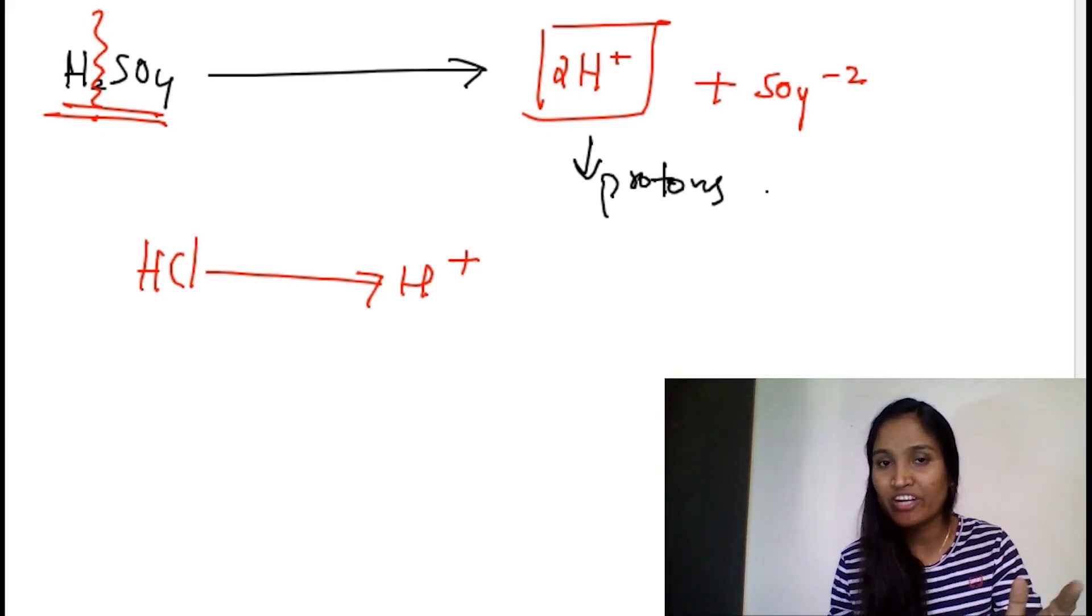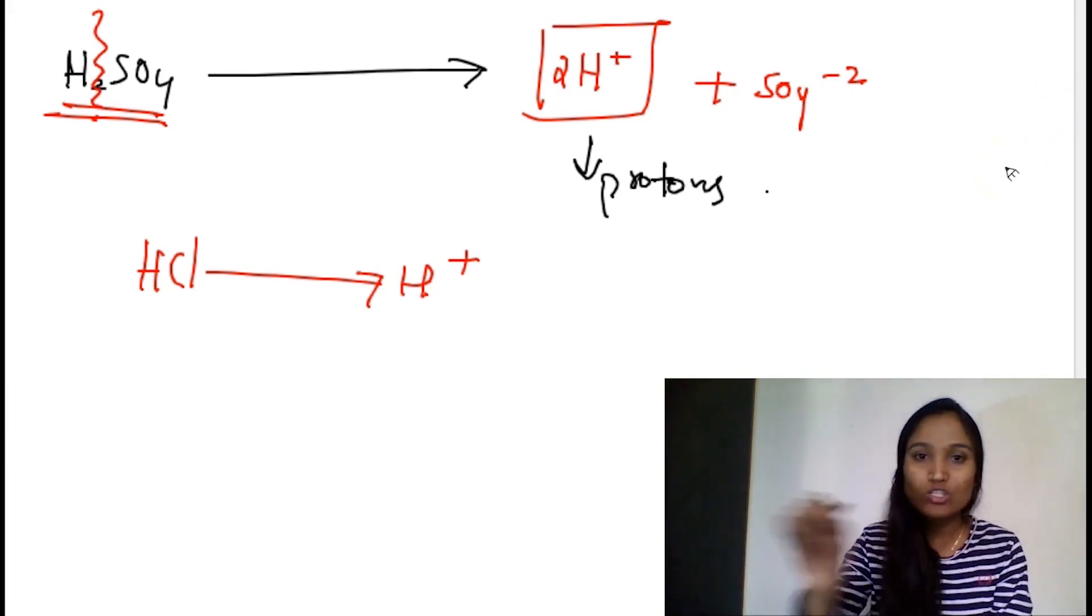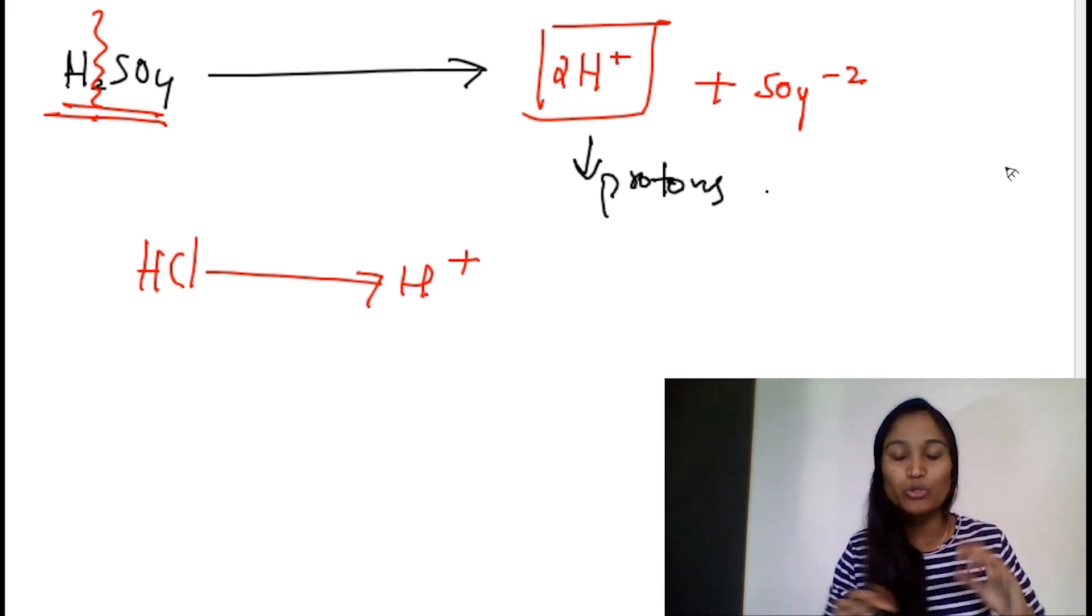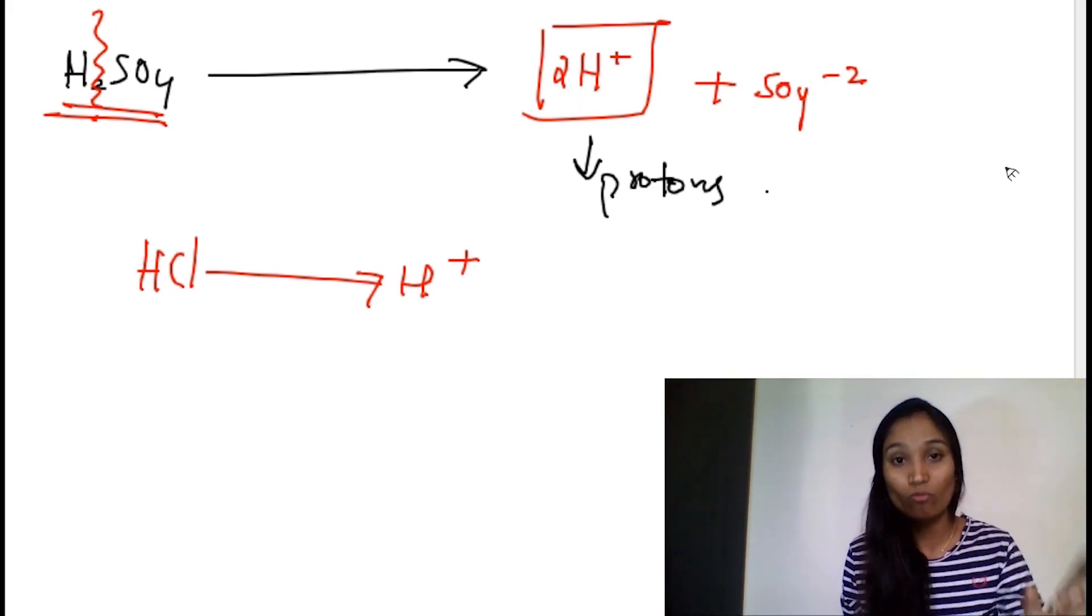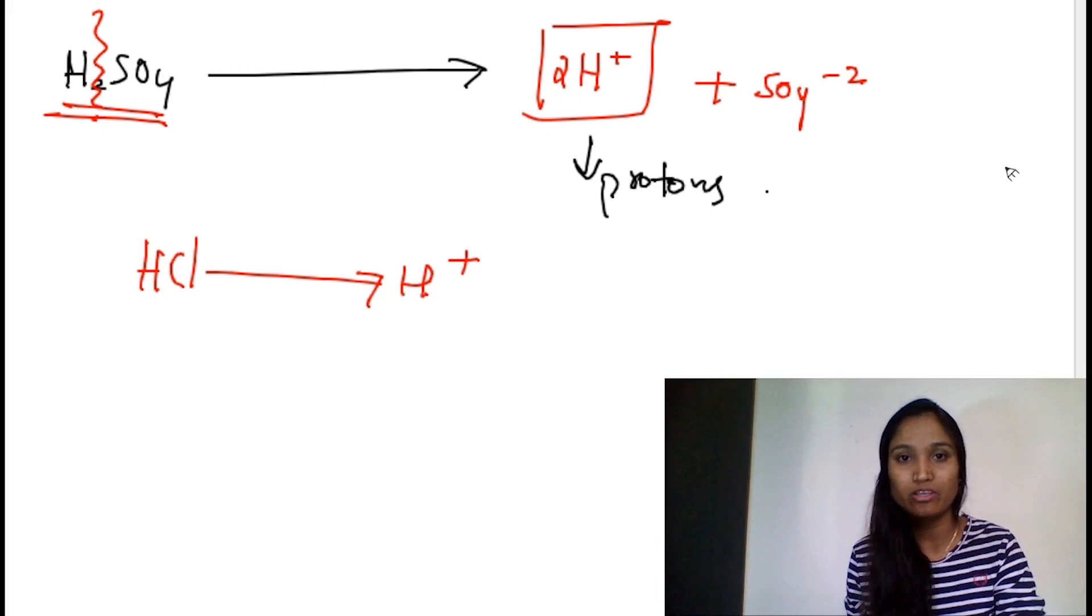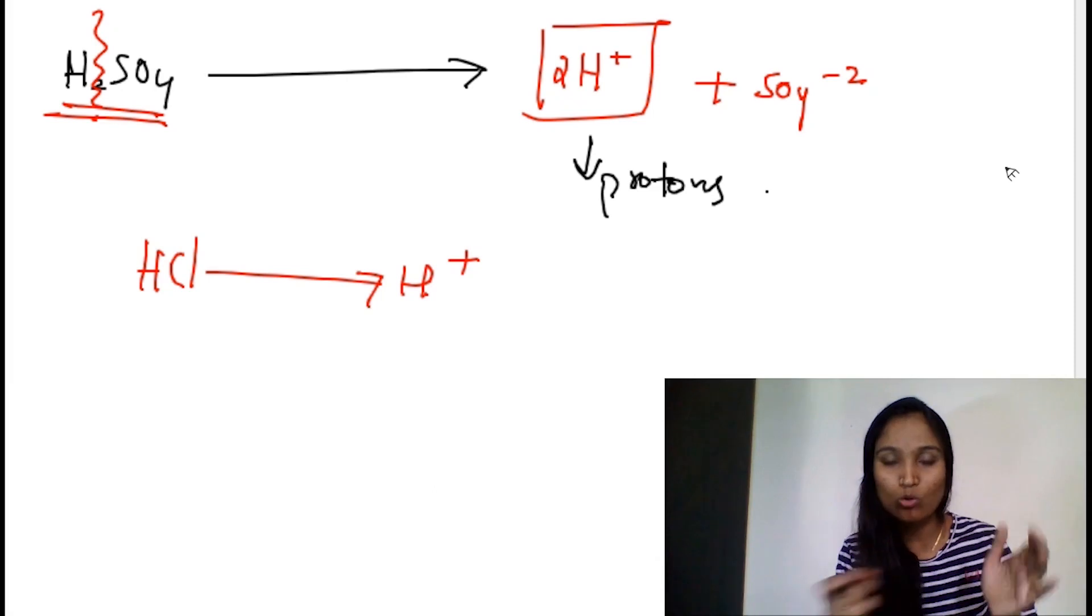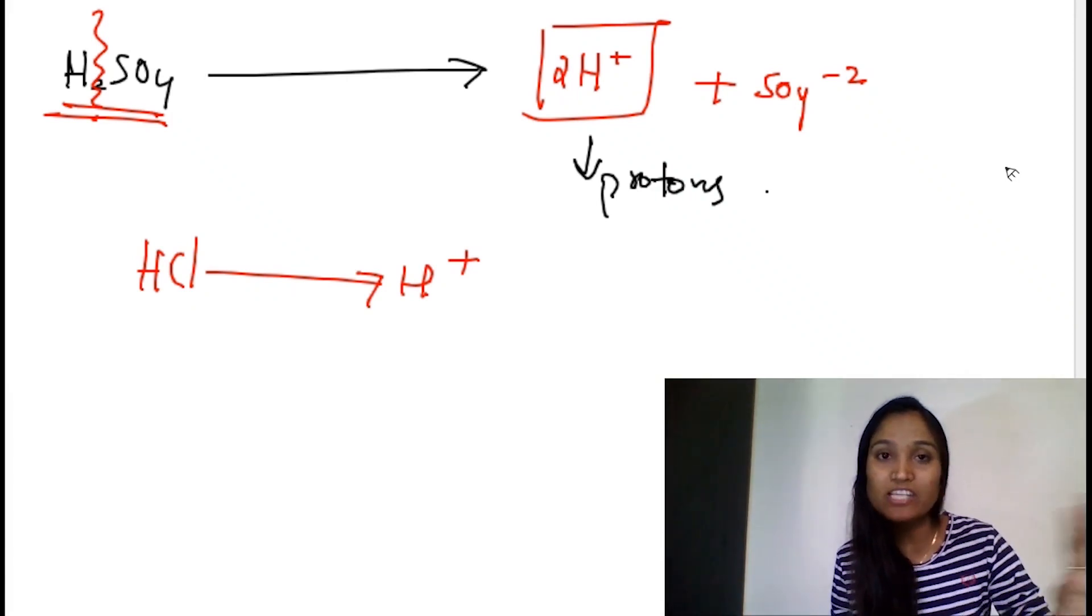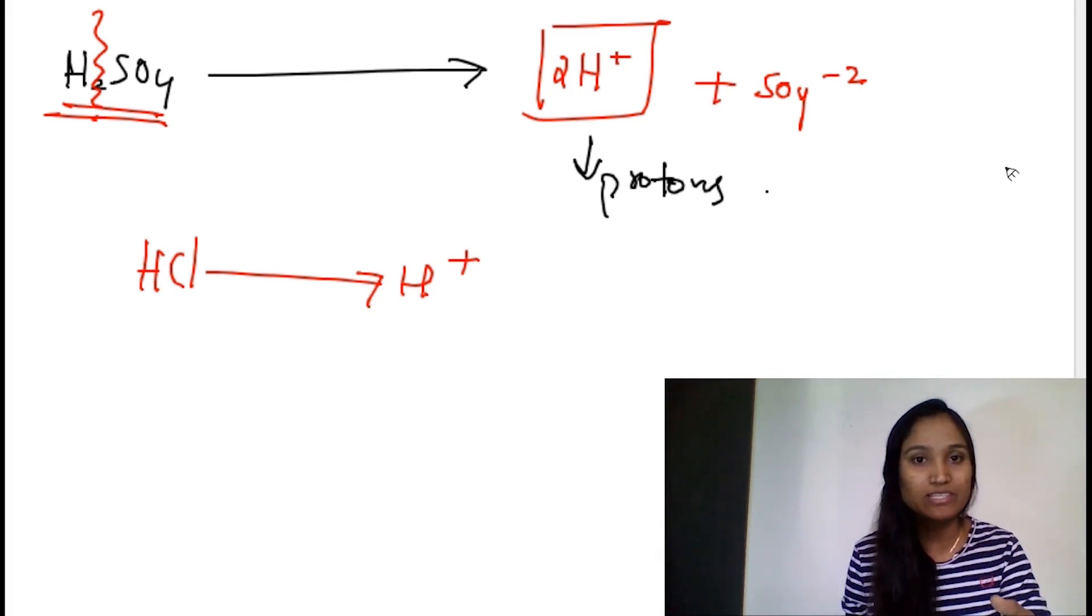These are some examples of acids. Acid is something which gives you proton or hydronium after dissolving into water. Underline this word: only after dissolving into water. If you are not dissolving into water, you can't detect if this is acid or not. Dissolving into water is a very crucial term. Based on this concept, you may also have a practical based question.